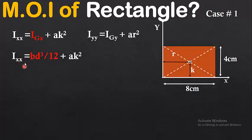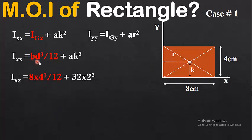The moment of inertia about the x-axis, Ixx, equals Igx + Ak². For a rectangular shape, Igx = bd³/12. As discussed in the previous video, putting in the values: Ixx = (8 × 4³)/12 + 32 × 2².